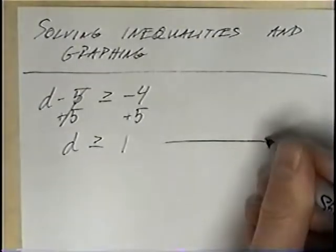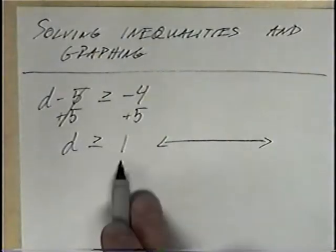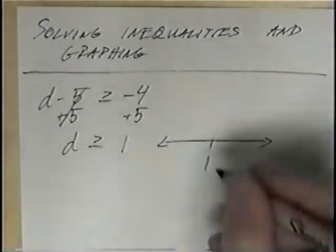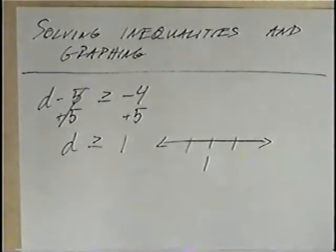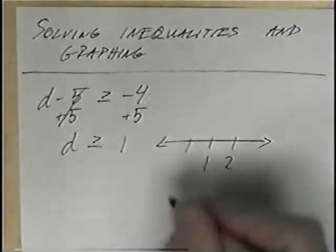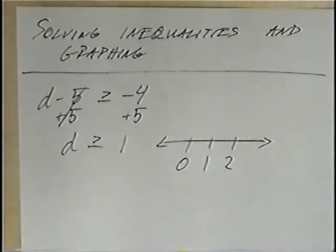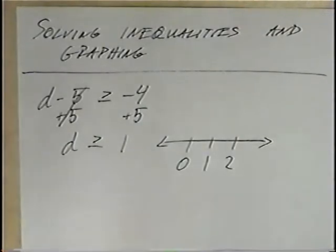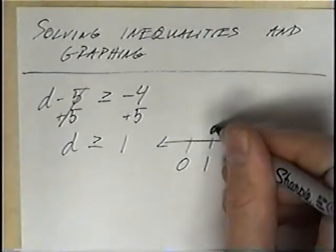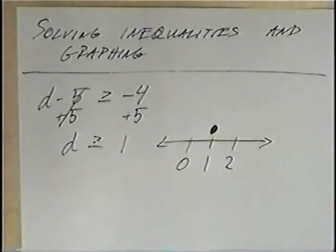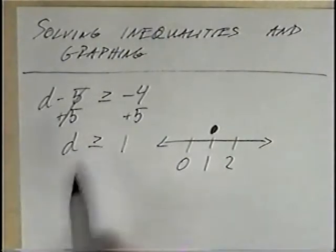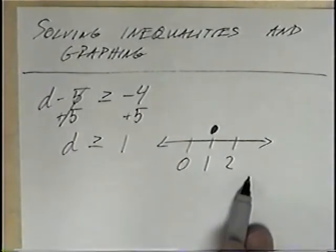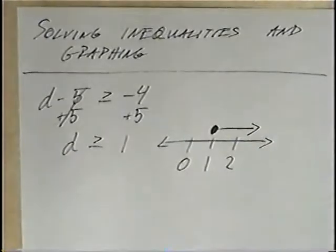The last step is to graph. We will put the number 1 in the middle of the number line, with one number to the left and one number to the right — 2 on the right side and 0 on the left side. This inequality has a line underneath, meaning or equal to, so the point is solid or closed. Since D is greater than or equal to 1, greater than means bigger numbers, which go to the right, so the line goes to the right.